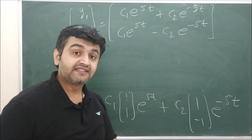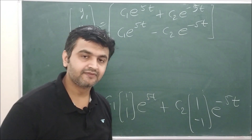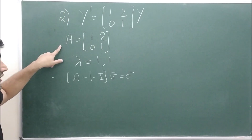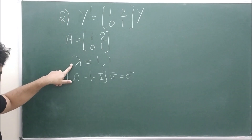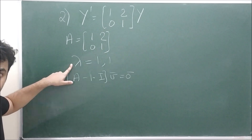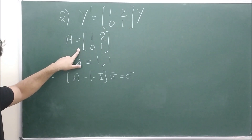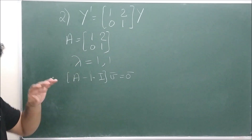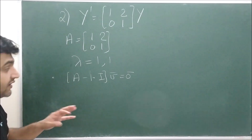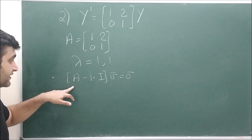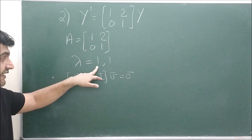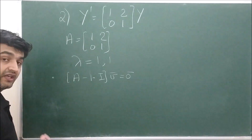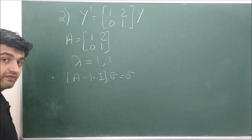Now let's look at the case where the eigenvalues are the same. Take this as the second example: y′ = [1, 2; 0, 1]·y. This is an upper triangular matrix, and for upper triangular, lower triangular, or diagonal matrices, the eigenvalues are always the diagonal entries. So the eigenvalues here are λ = 1 and λ = 1 — both equal to 1.